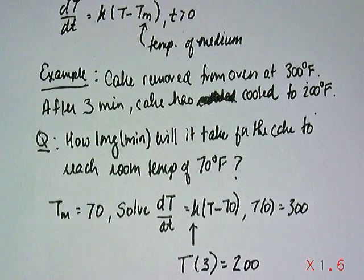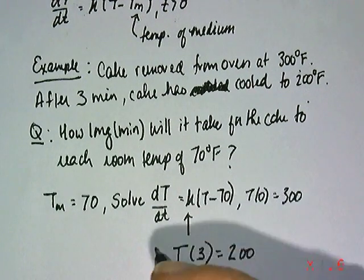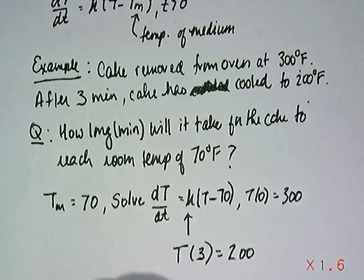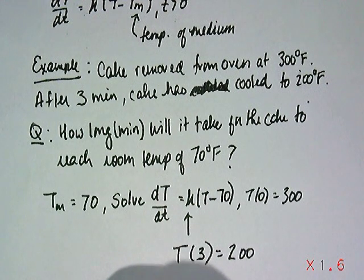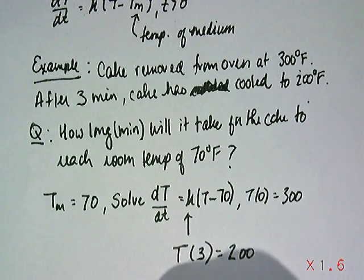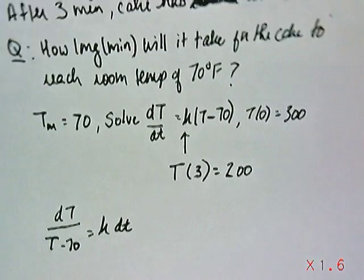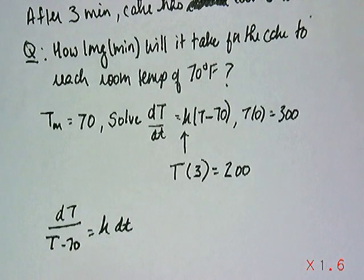So if we just look at the equation itself, it's easy to see that it's separable, and you could rewrite it in this form: the derivative dT over T minus 70 could be written as the constant of proportionality times dt. That's just separating the equation like we normally would.